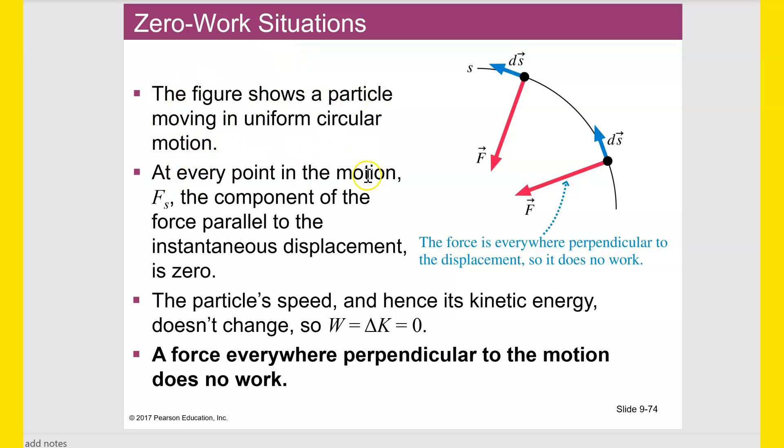Zero work situation. The figure shows a particle moving in uniform circular motion at every point in the motion Fs the component of force parallel to the instantaneous displacement is zero. So they're saying F in the S direction. The S component of force. The component of force that points in the same direction as the S axis which is the axis of movement here is always zero because it looks like circular motion, the uniform circular motion that is, so the force points in and the S direction points tangent to that which is a 90 degree angle to that.